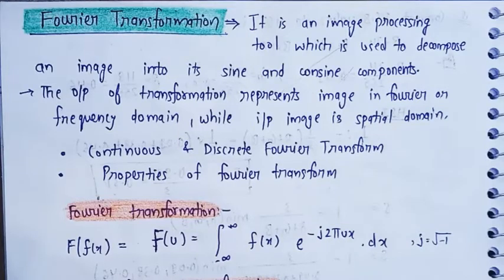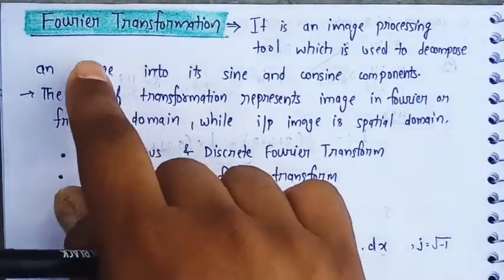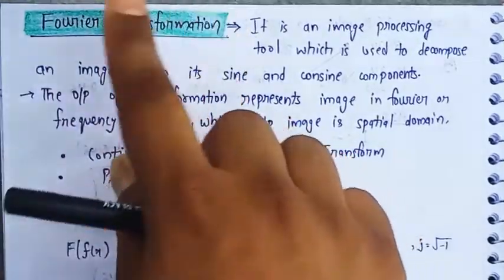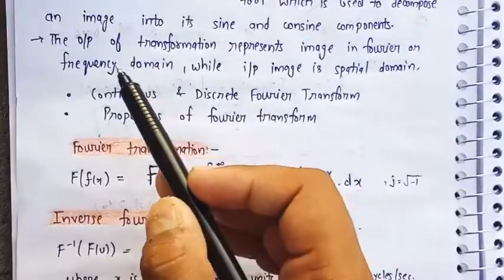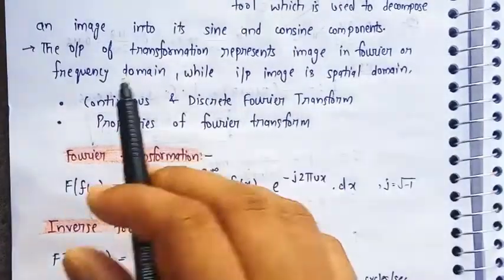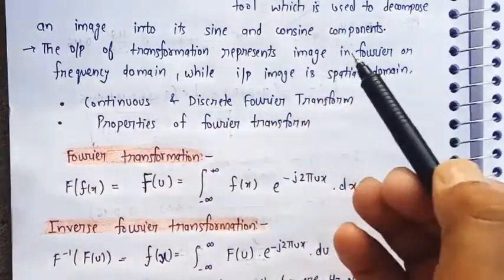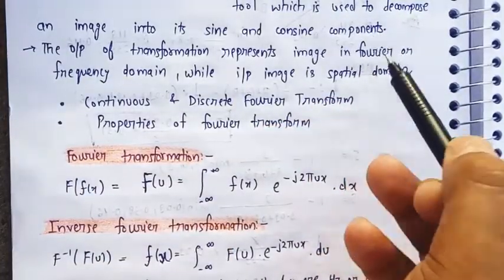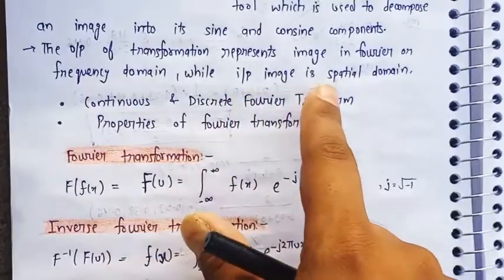Welcome to my channel. Today we are going to discuss Fourier transformation in image processing. The Fourier series is a mathematical concept. Why do we need this Fourier transformation in image processing? Because the output image is in the form of frequency domain, and the frequency domain exists in Fourier form.